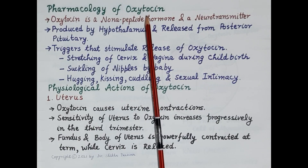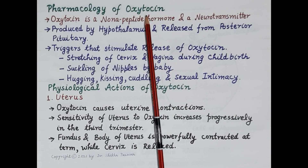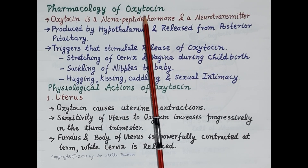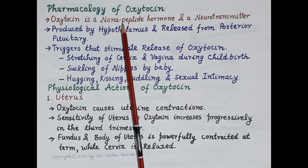Hello students. In today's video we will study pharmacology of oxytocin. We will discuss its physiological actions, mechanism of action, uses, and adverse effects. Oxytocin is a natural uterine stimulant — it contracts the uterus. Oxytocin is a nonapeptide hormone.